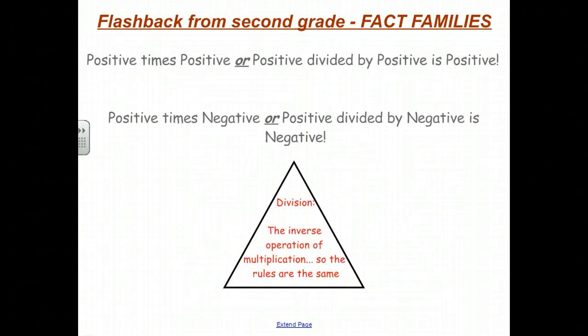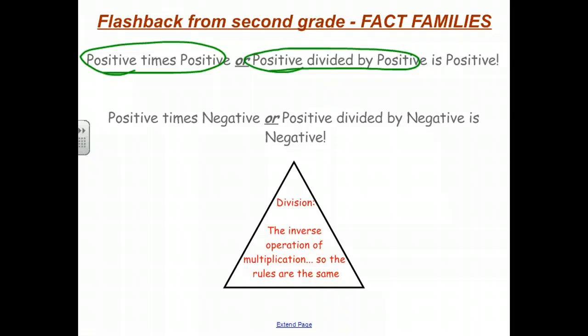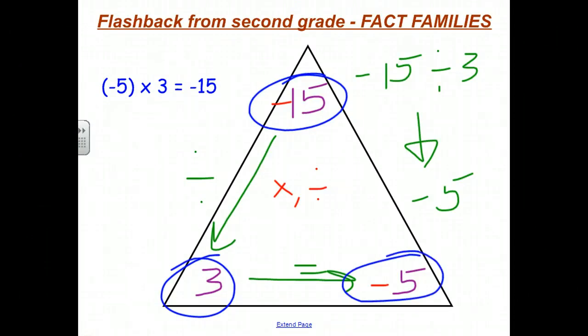We know that a positive times a positive, or a positive divided by a positive, has to be positive. I only showed one way of looking at the positive and negative — positive times negative or positive divided by negative — but it shouldn't take too much convincing to say the rules work both ways. Negative times positive is negative, and we can see that with fact families. A negative divided by a positive has to be negative — and we showed that when we looked at negative 15 divided by 3 equaling negative 5.